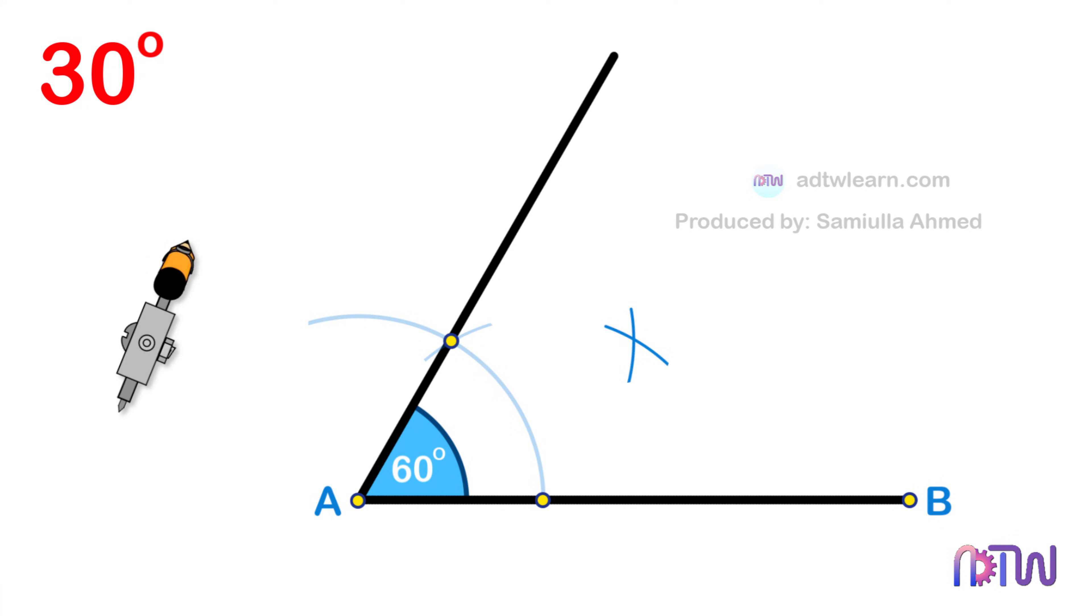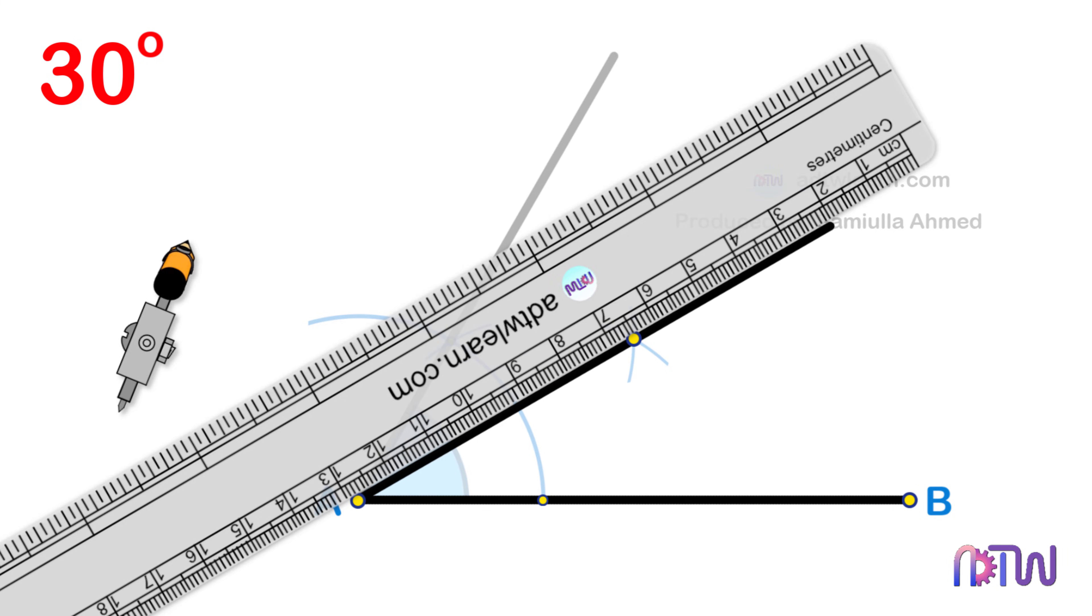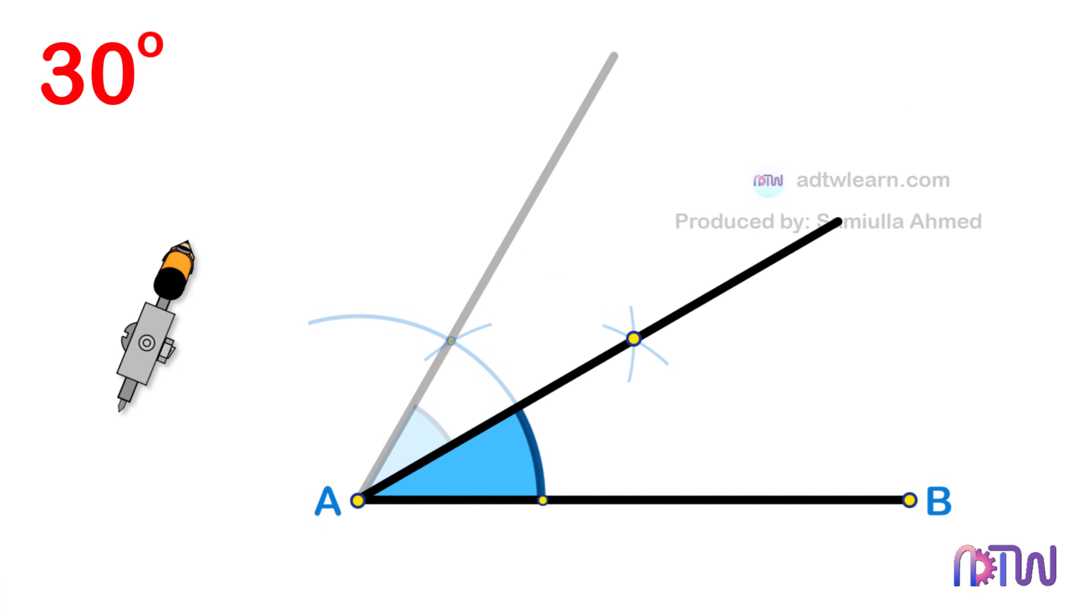Finally, draw a line passing through this point from the endpoint A of the line segment. This is the required 30 degree angle.